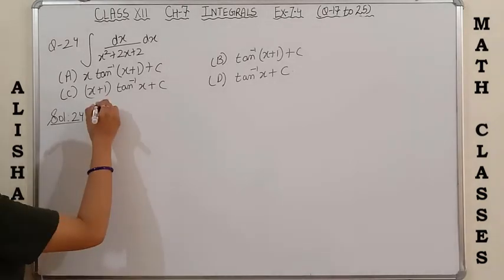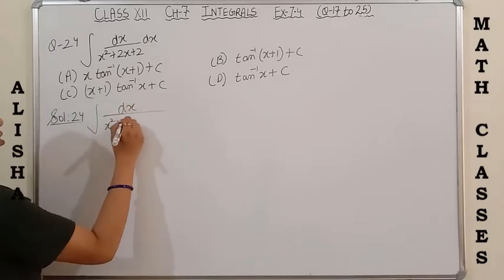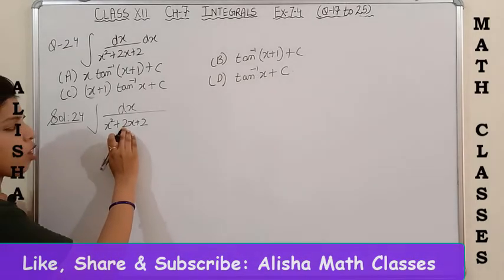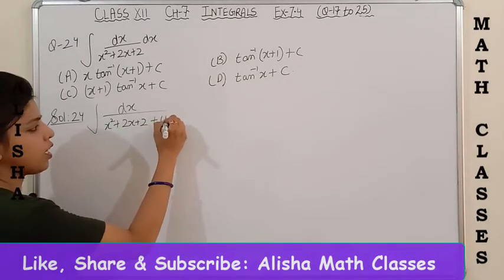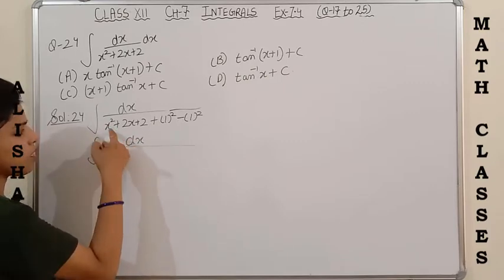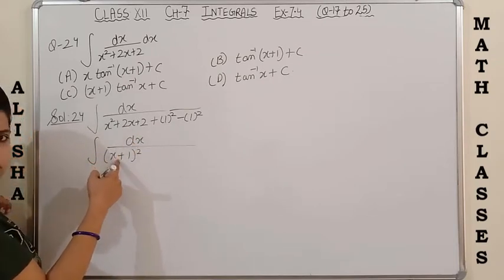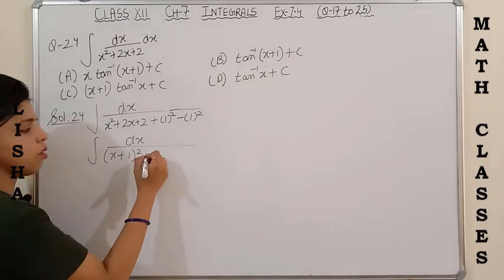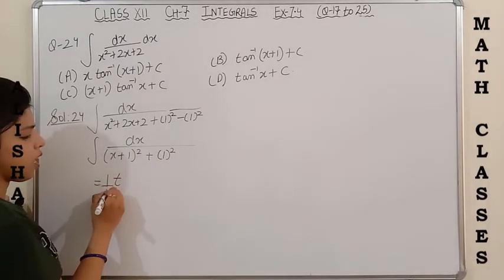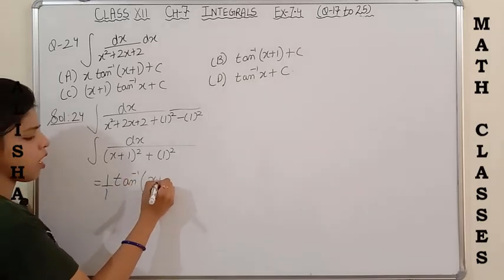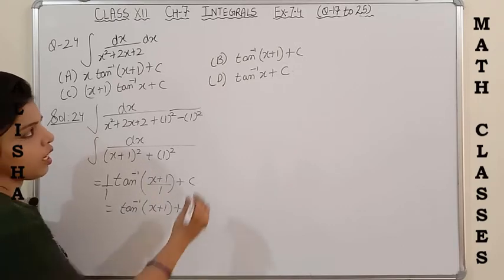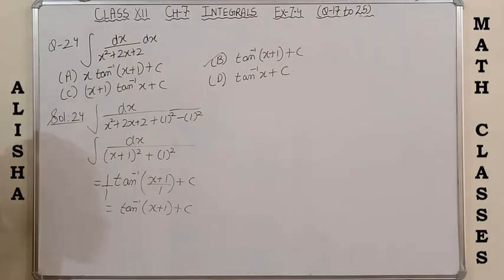Next is the MCQ question, which is 1 upon a quadratic equation. We apply the complete square method: half the coefficient of x is 1, so add and subtract 1². It becomes dx upon [(x+1)² + 1²]. This is of the form 1/(x²+a²), and the formula is (1/a) tan⁻¹(x/a) + C. Here a = 1, so the answer is tan⁻¹(x+1) + C. The correct option is B.